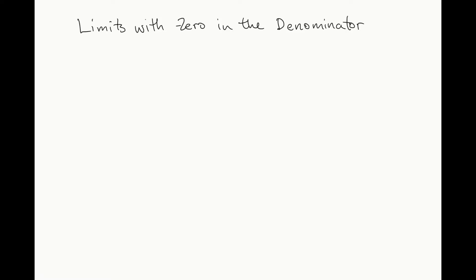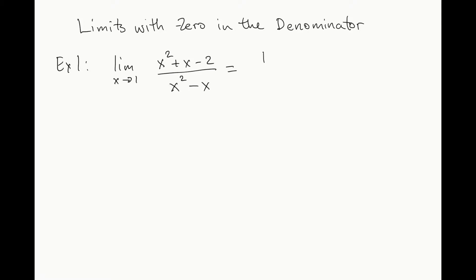When finding limits of rational functions, we could run into the problem of having zero in the denominator, as I will illustrate with an example. So let's say example one: we take the limit as x goes to 1 of the following rational function. However, when we try to solve it by substitution, we get zero over zero — we have zero in the denominator, and obviously it does not give us a meaningful answer. So whenever you're dealing with zero in the denominator, the solution is to carefully skirt around it.